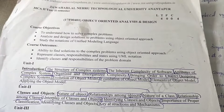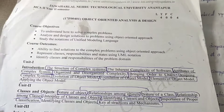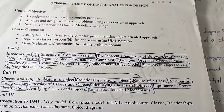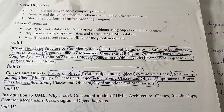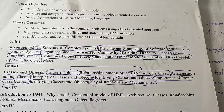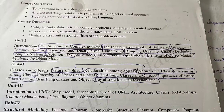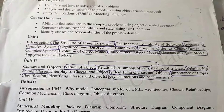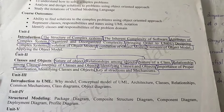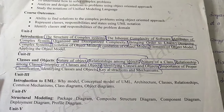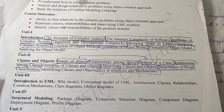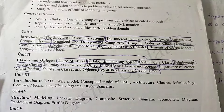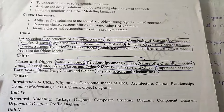Welcome to my channel. Today I am discussing Object Oriented Analysis and Design, Unit 1. The syllabus covers the structure of complex systems, inherent complexity of software, attributes of complex systems, organized and disorganized complexity, bringing order to chaos, designing complex systems, evolution of object models, foundations of object models, elements of object models, and applying the object models.